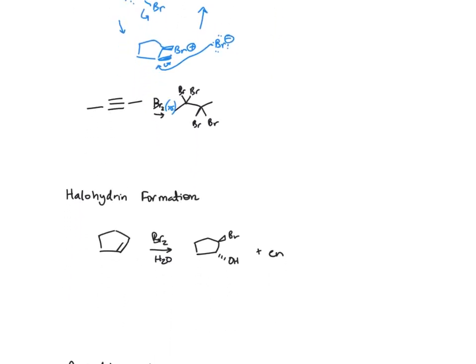The next reaction is halohydrin formation. Here we're again going through the bromonium ion intermediate, and water attacks to give you the halohydrin and its enantiomer. Why doesn't bromine add twice here? This is because the solubility of bromine is really low in water, like three percent, so the amount of water present is in excess compared to the bromide ion that is formed, and water reacts with that intermediate instead of bromine.